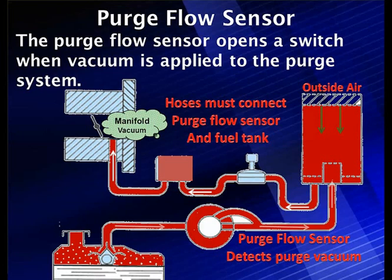In this particular GM case, there's a purge flow sensor. It opens a switch when vacuum is applied to the purge system, indicating we have purge. That's the extent of the diagnostics — is there purge? Yes or no? Only major leaks, restrictions, and disconnected hoses can set this code. There is no fuel cap monitor because it's not present on this system.